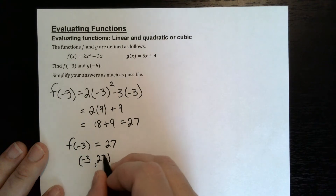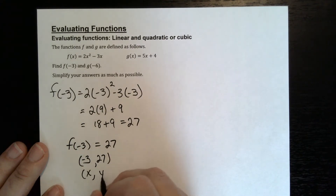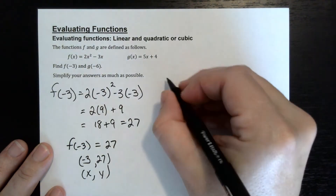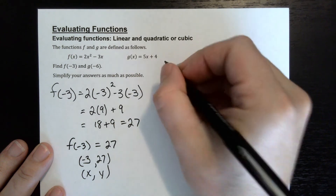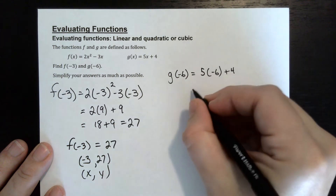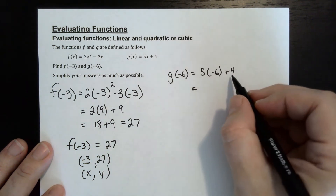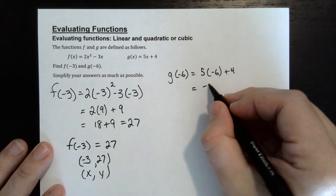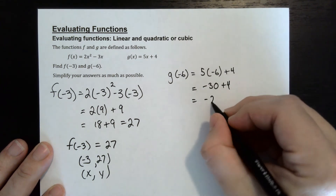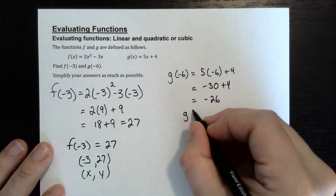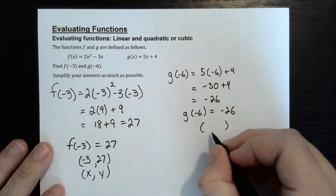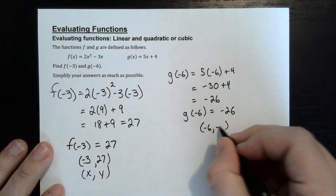You can also say that's a point on the graph: negative 3 comma 27, where negative 3 is x and 27 is y. Now let's look at g of negative 6 plugged into 5x plus 4: that's 5 times negative 6 plus 4, which gives negative 30 plus 4, equals negative 26. So g of negative 6 is equal to negative 26, and the point on the graph is negative 6 comma negative 26.